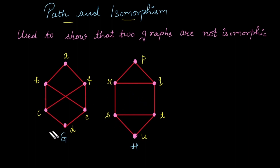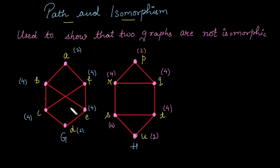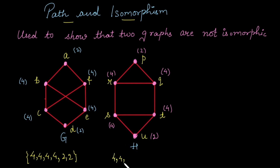In checking isomorphism, the first step is to check the number of vertices. The number of vertices in graph G is 6 and in graph H is 6. Next, the number of edges: graph G has 8 edges and graph H also has 8 edges. Now find the degree sequence. For graph G there are 4 vertices of degree 4 and 2 vertices of degree 2. The degree sequence of graph H is the same: 4 vertices of degree 4 and 2 vertices of degree 2. So the degree sequences for both graphs are the same.